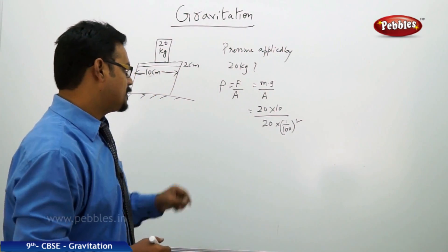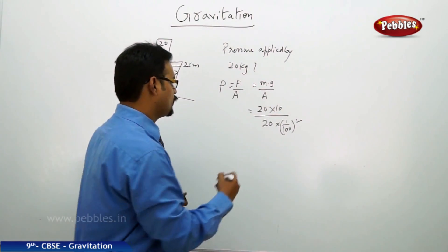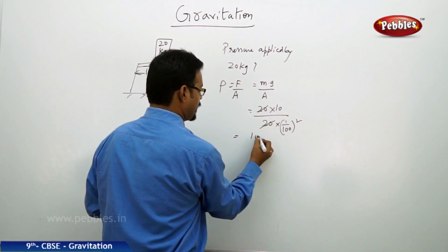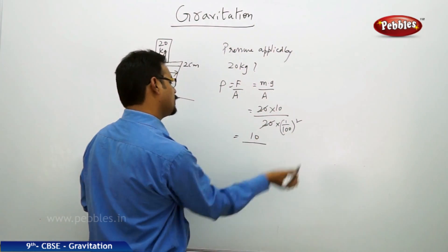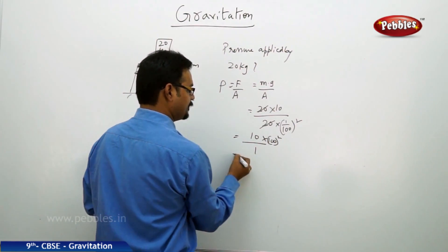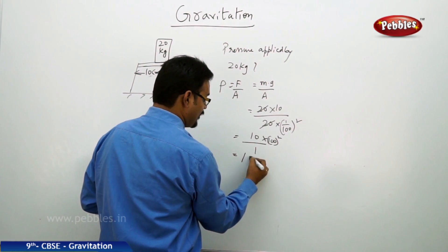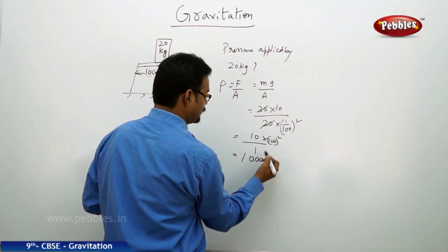One centimeter equals one by hundred meter, so if I write one by hundred square, what you get is 20 × 20 cancel 10, divided by one by hundred square. When it goes to the numerator, it will be hundred square, so one followed by five zeros.